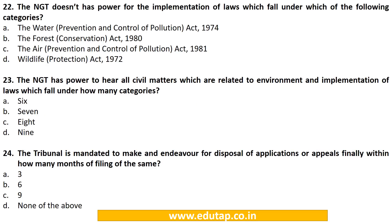MCQ 22: The NGT doesn't have power for implementation of laws which fall under which of the following categories? A. The Water Prevention and Control of Pollution Act 1974, B. The Forest Conservation Act 1980, C. The Air Prevention and Control of Pollution Act 1981, D. Wildlife Protection Act 1972. The correct answer is D. Wildlife Protection Act 1972. MCQ 23: The NGT has power to hear all civil matters related to environment under how many categories? A. 6, B. 7, C. 8, D. 9. The correct answer is B. 7.